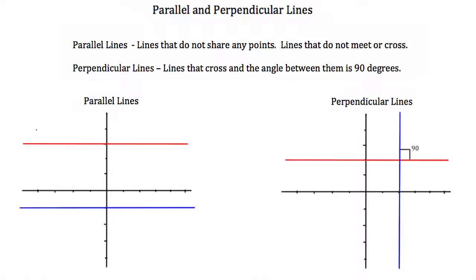Here we have an example of parallel lines. The distance between them is always the same. They will never meet or cross, so they are parallel lines.